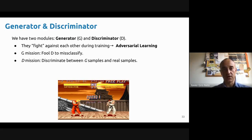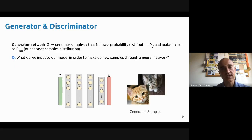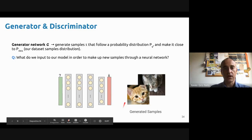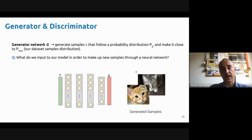Let's look at it in more detail. What the generator does is generate samples that will follow a property distribution, which we want to make as close as possible to the real data distribution — we call this P of data. So we have a network that will be generating samples, like images of cats. We'd like the samples to follow the same data distribution as the real one, and we would like the network to generate different cats — not always the same cat.